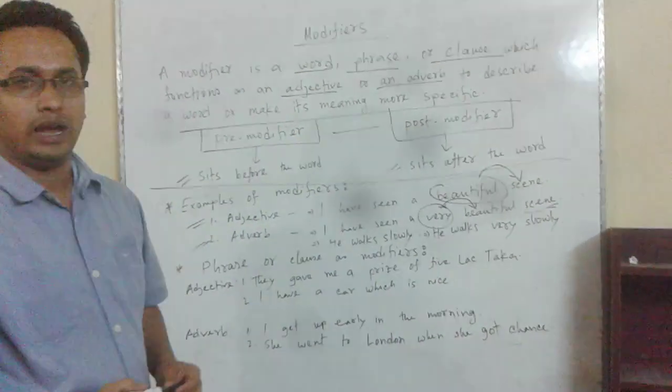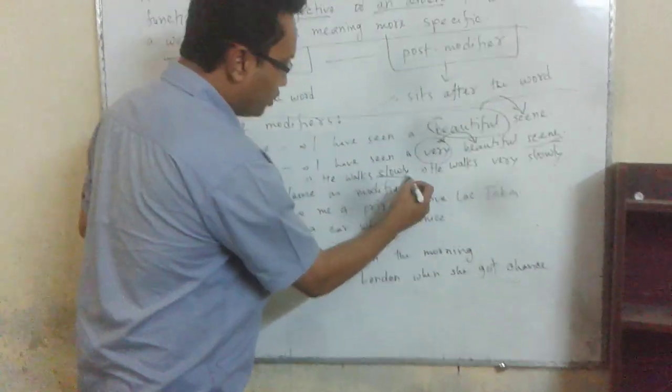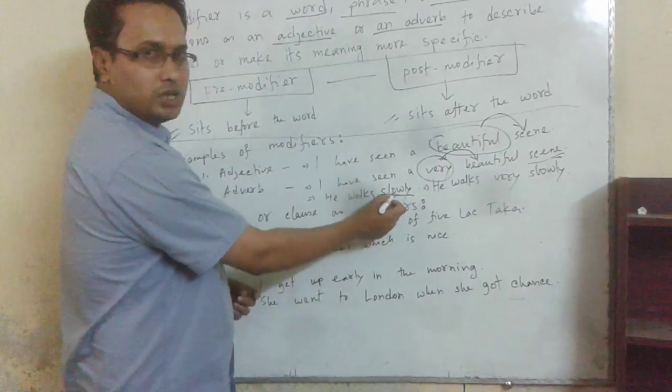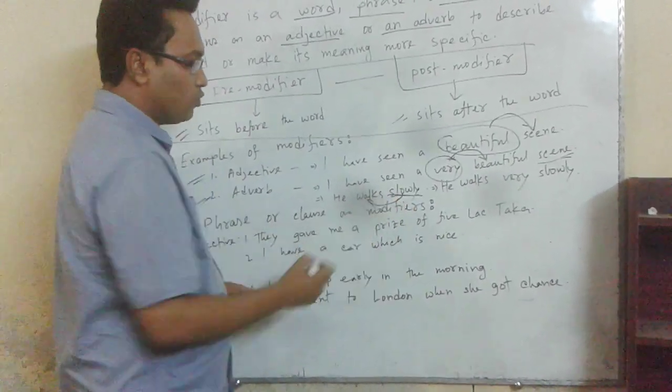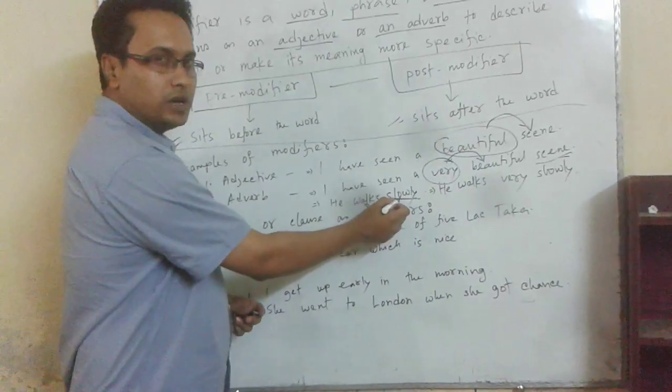Adverb modifier: He works slowly. Slowly modifies the word works, which is a verb. So it is an adverb modifier.